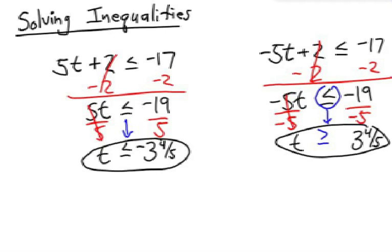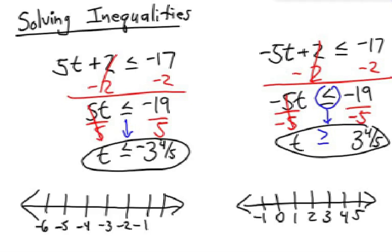Now, try to write these on a number line and notice the difference. On the left, where t is less than or equal to negative 3 and 4 fifths, I need to locate that point on the graph and make sure it is a solid dot, because I am including that number in my answer with the equal bar on the bottom. And if I'm going less than, I am coloring it in to the left, and it goes forever in a left negative direction. Make sure you write the large arrowhead on the left side.